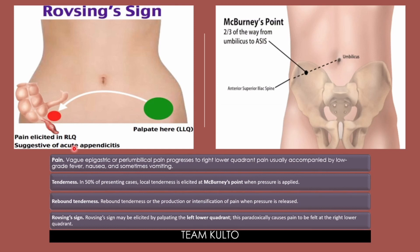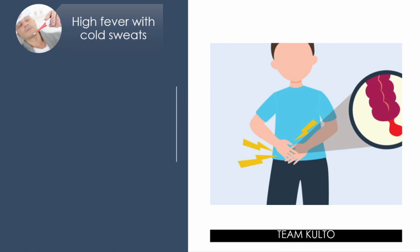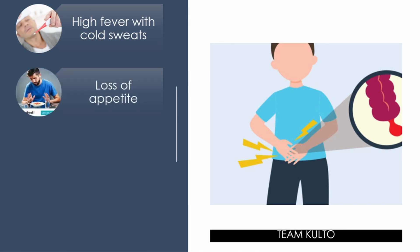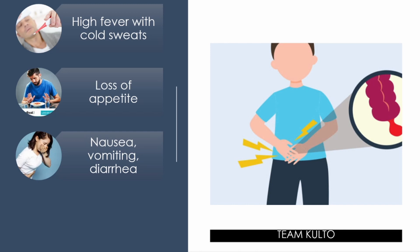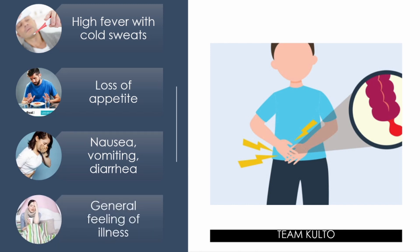Other signs and symptoms include high fever with cold sweats — the patient is sweating profusely because of the severe pain, and fever is present due to the inflammation. Loss of appetite occurs because the patient is in pain and there is a GI problem. Additionally, nausea, vomiting, diarrhea, and a general feeling of illness are present.